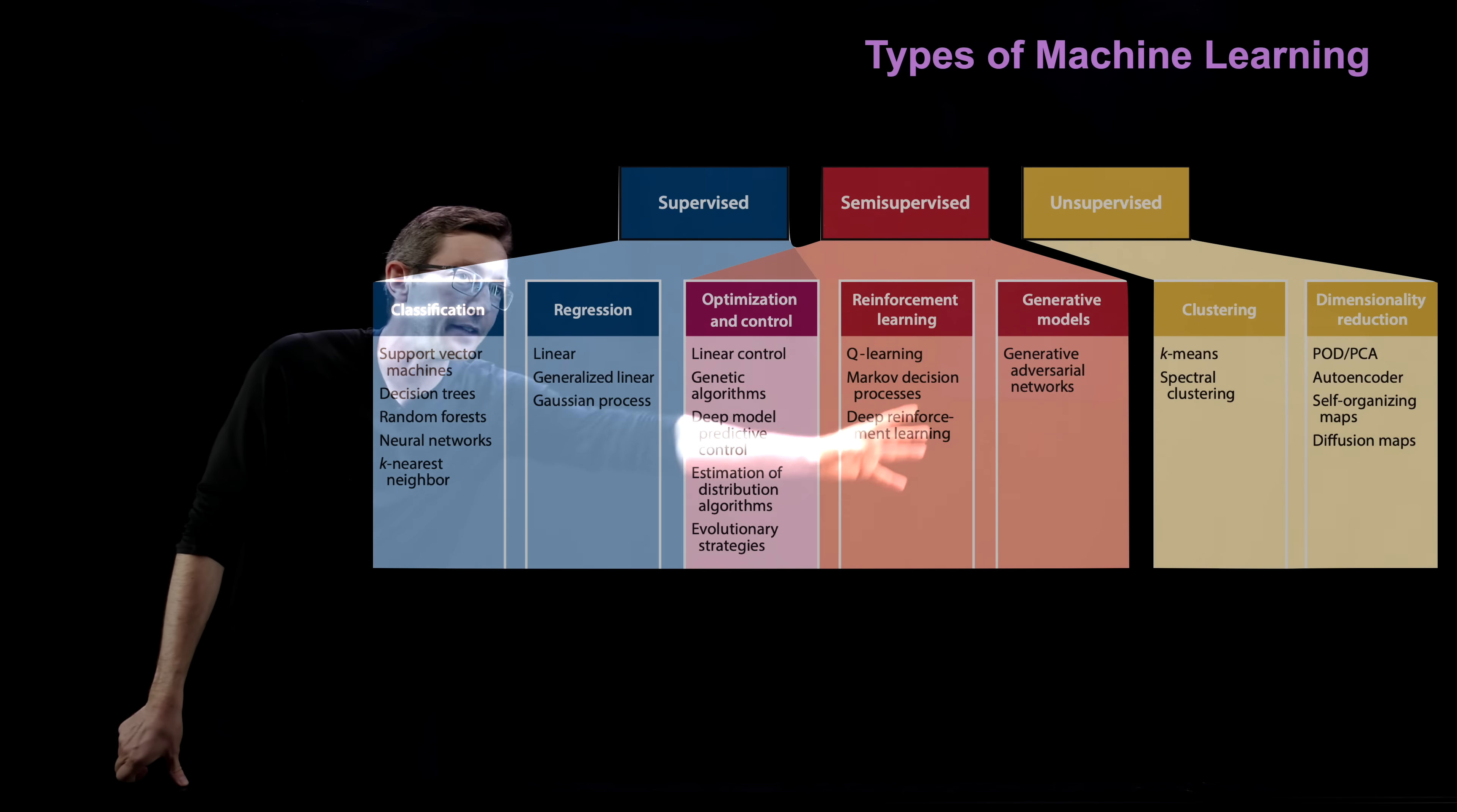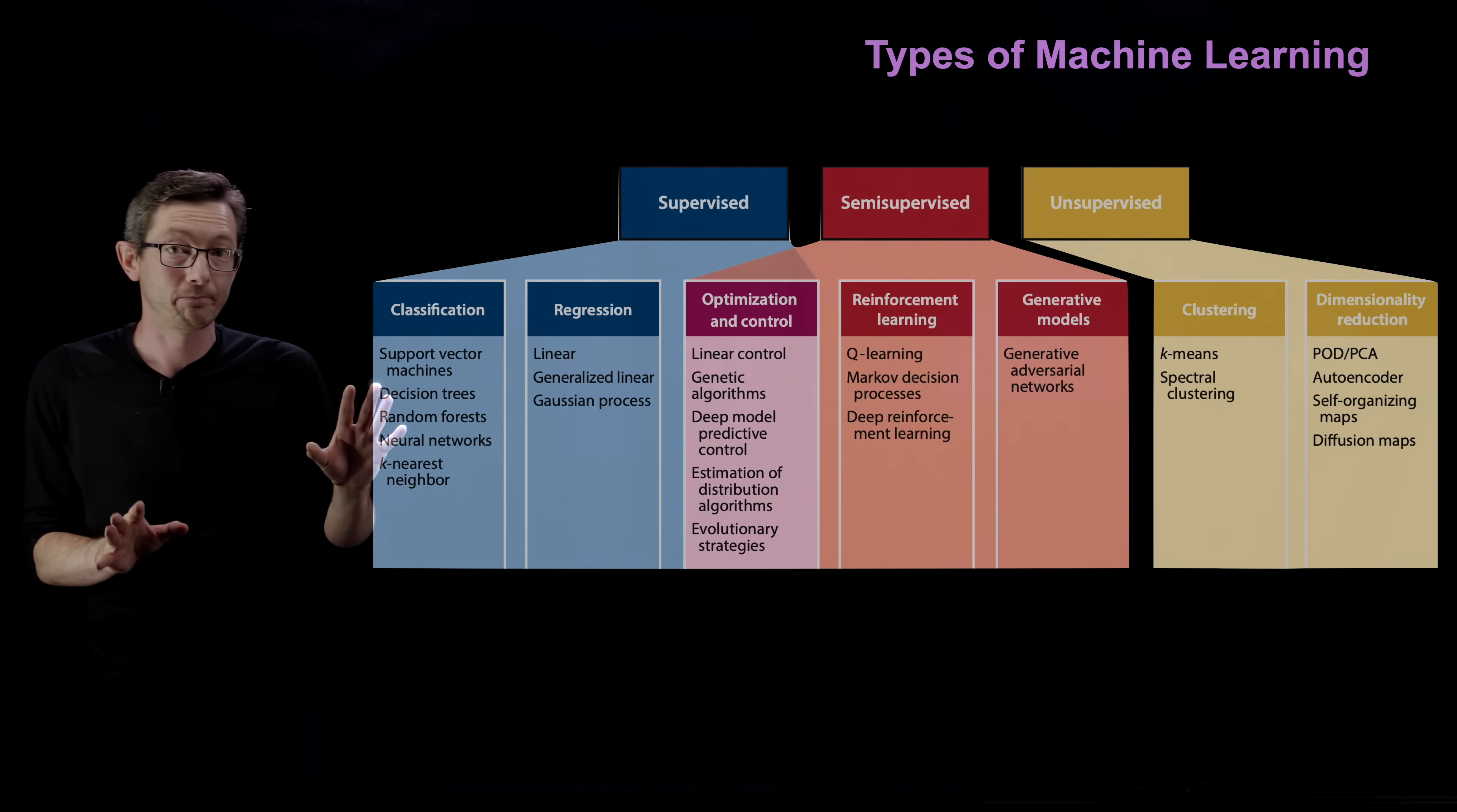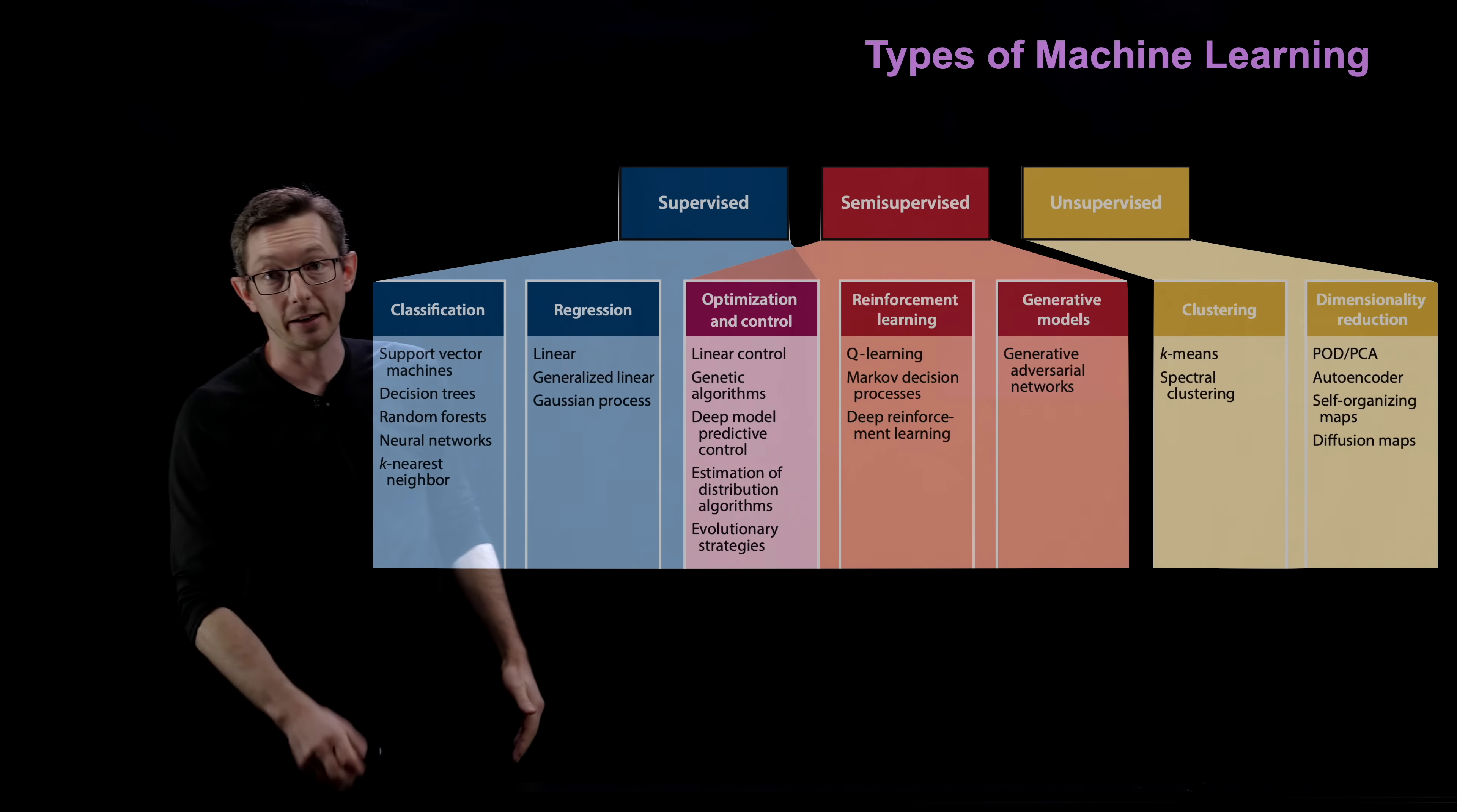Then there's a lot of stuff in the middle that we call semi-supervised where there's partial knowledge or partial labels or some of the data is labeled. Things like reinforcement learning and generative models typically are in this kind of nebulous middle ground. There are lots of different types of machine learning and it usually depends on what kind of data you have and what your task is with that data.